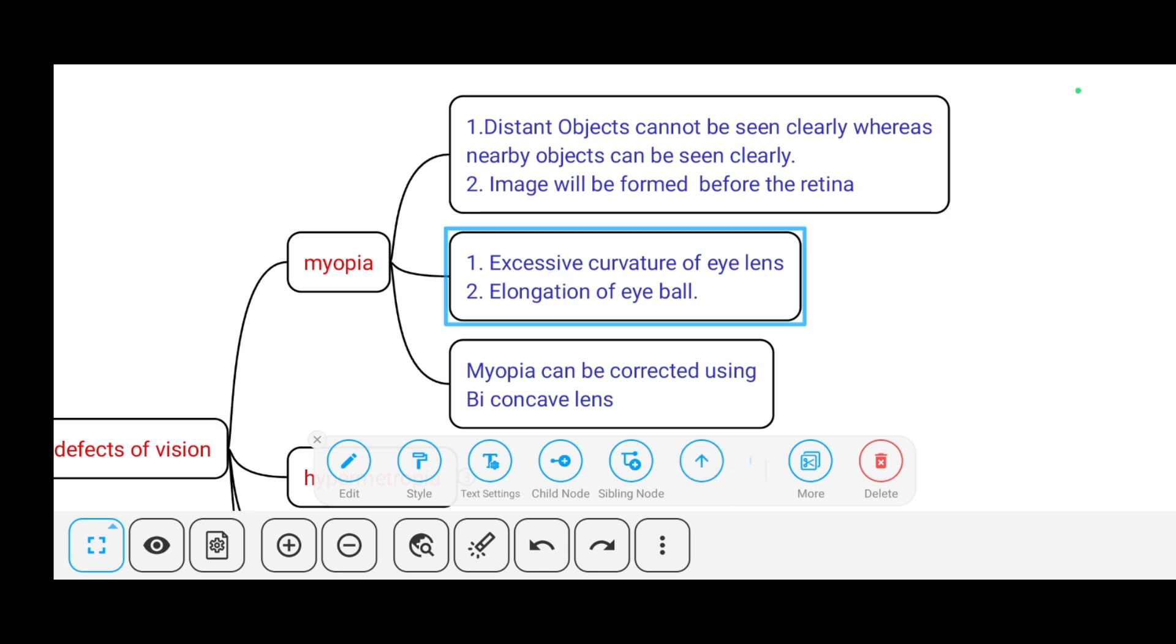The causes for myopia are excessive curvature of eyelids and elongation of eyeball. This myopia can be corrected using biconcave lens.